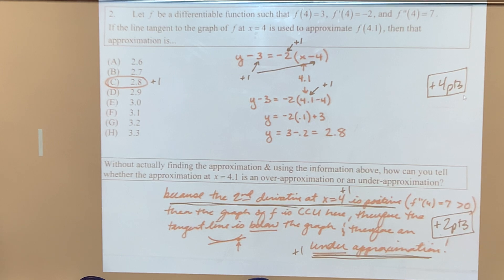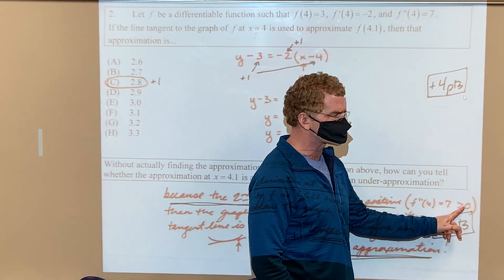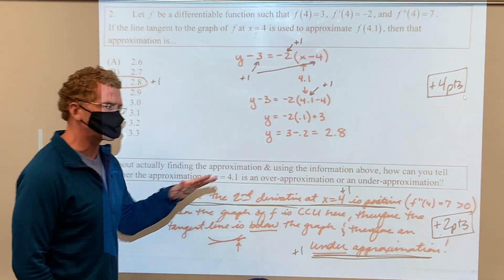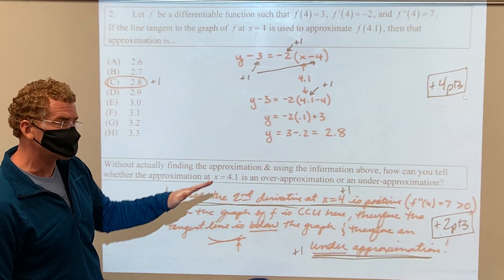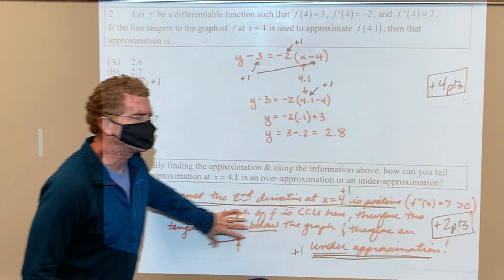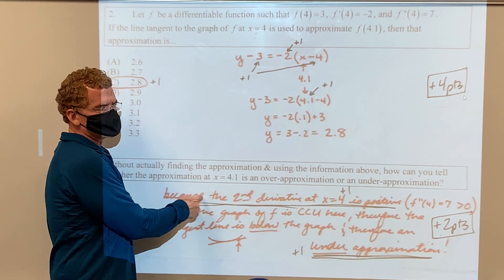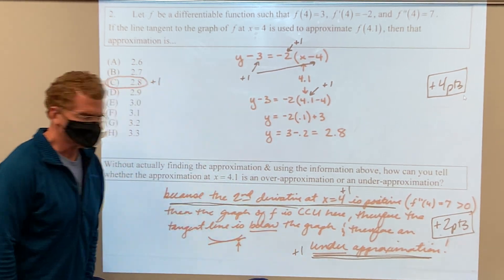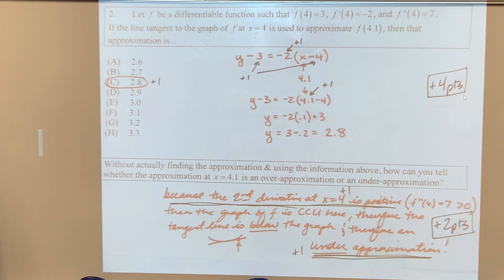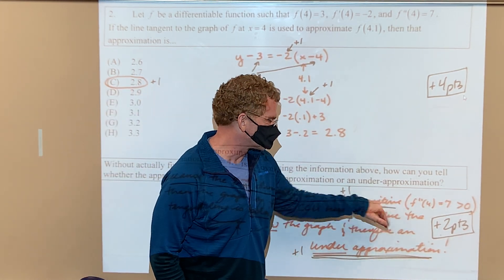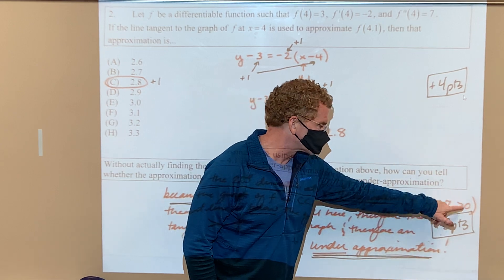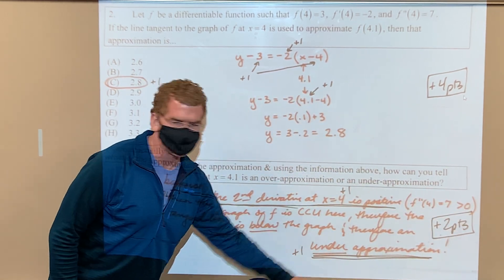Would it ever ask you to explain it, and can you just draw the picture? That's probably fine, but if you just say because the second derivative is positive, then it's concave up, and say tangent lines to a concave up region would occur below—you could just say tangent lines are always below concave up regions. I would probably state why you know it's concave up. Because the second derivative of 4 equals 7 is positive, it's concave up, therefore tangent lines are under-approximations.